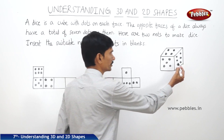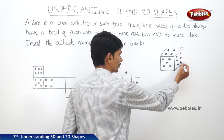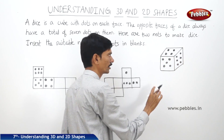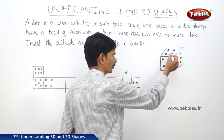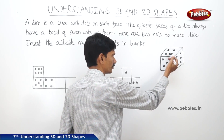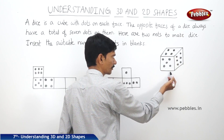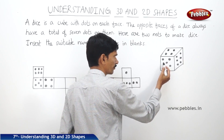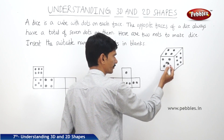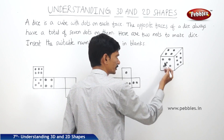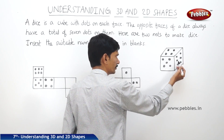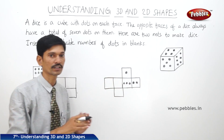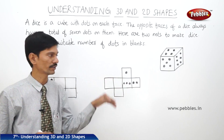So here, this right-side face has six dots, meaning its opposite face will have only one dot. Here it has four dots, so its opposite bottom face has three dots on it. And this front face has five dots, so the opposite back face will have two dots on it. The sum of the dots on the opposite faces must be seven.